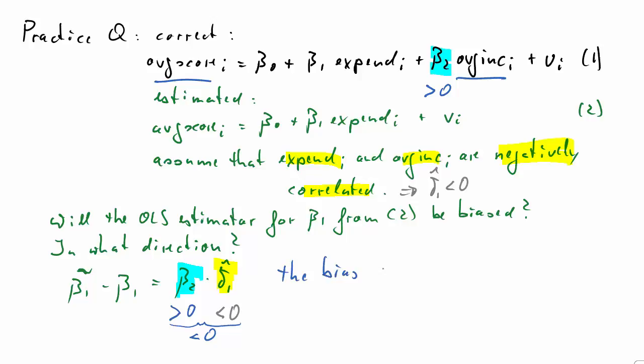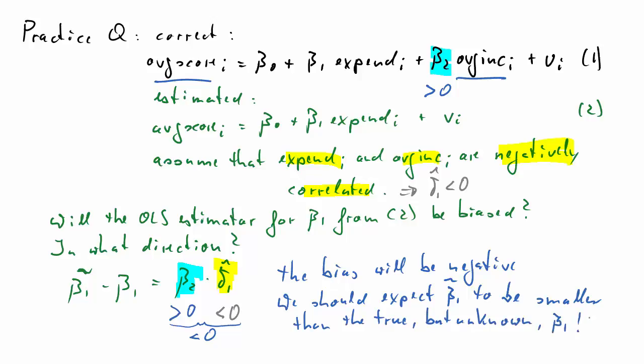That means altogether the bias is going to be negative. What does that mean? That means when we estimate beta 1 from equation 2, we will get a value that tends to be smaller than the true value for beta 1. So we will underestimate the effect of expenditure on the average score. Thank you.